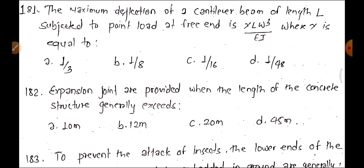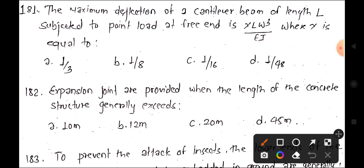We will cover questions 181 to 190, the daily 10 most important questions. The maximum deflection of a cantilever beam of length L subjected to a point load at its free end is WL cube by EI, where x is equal to 1/3.